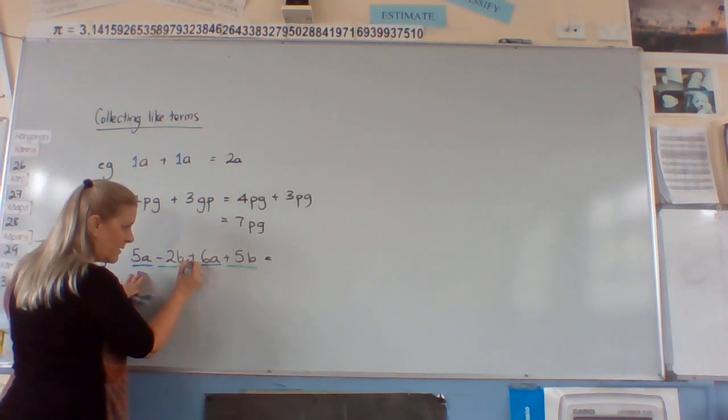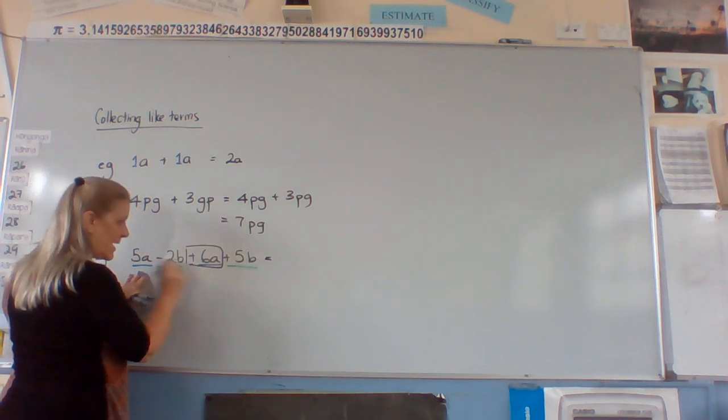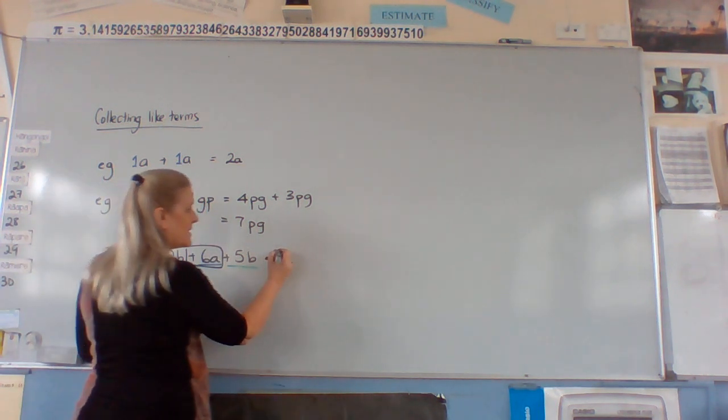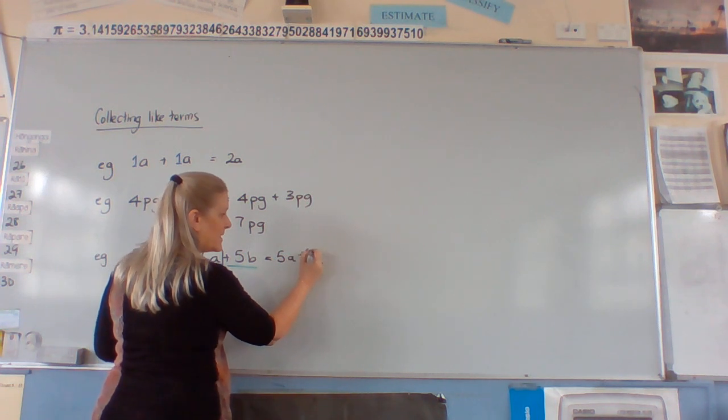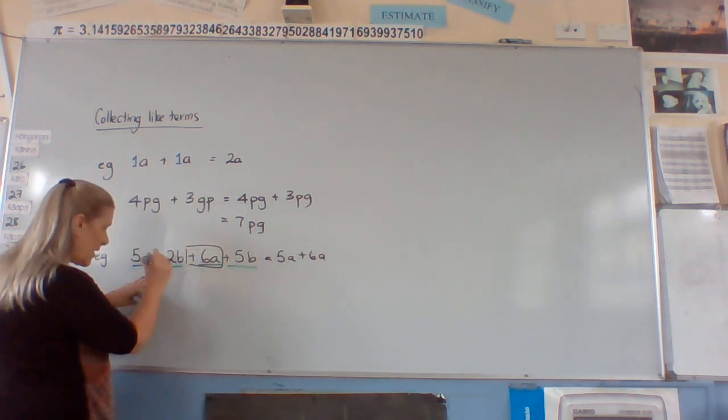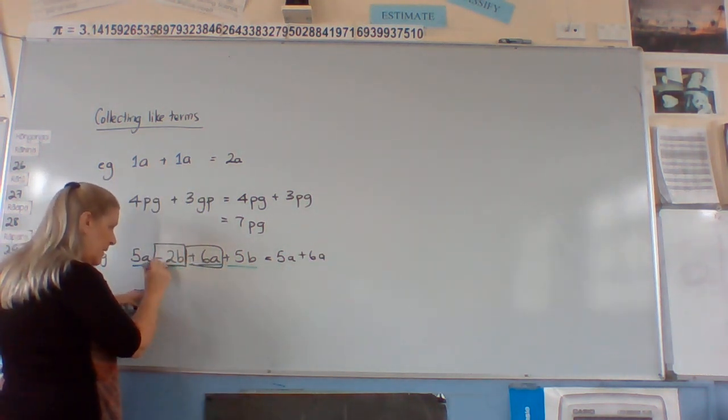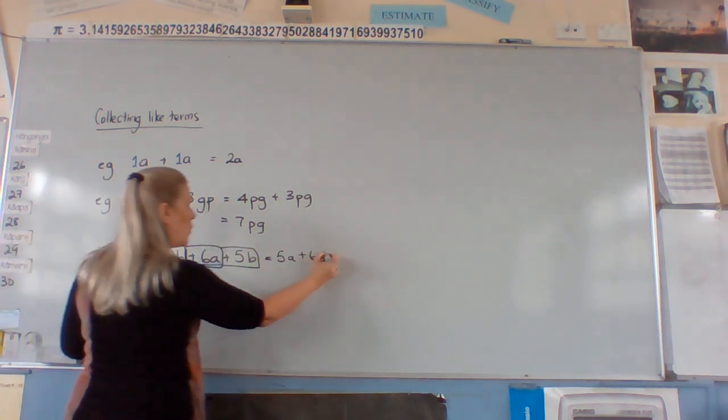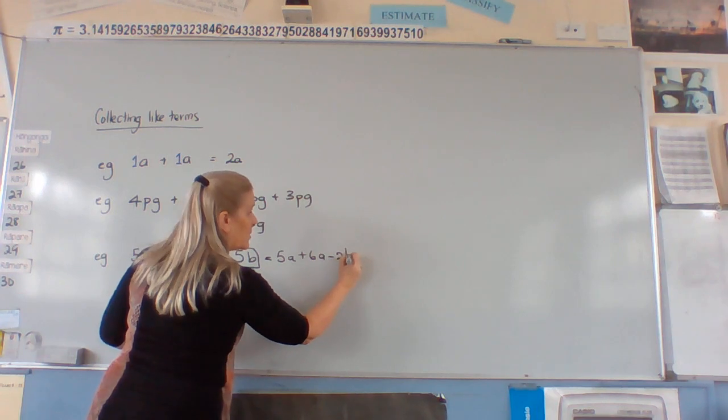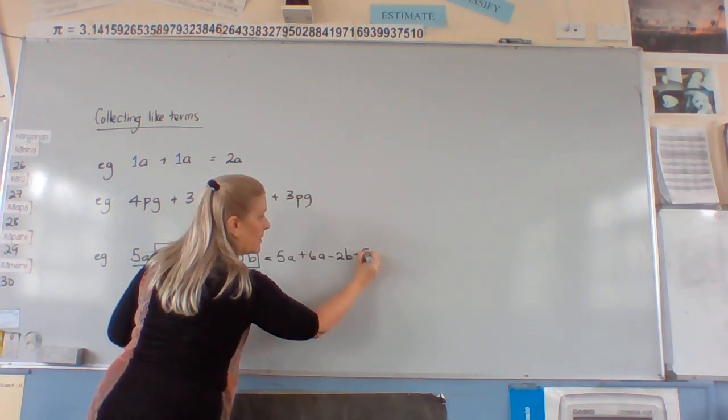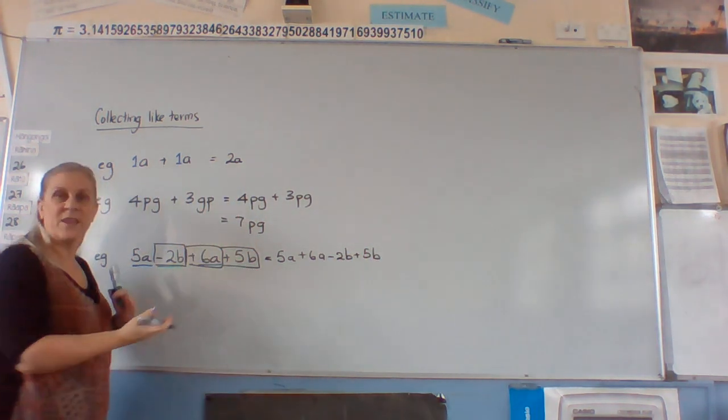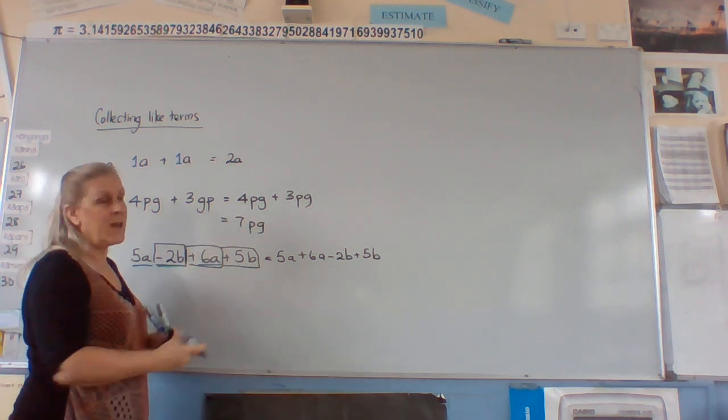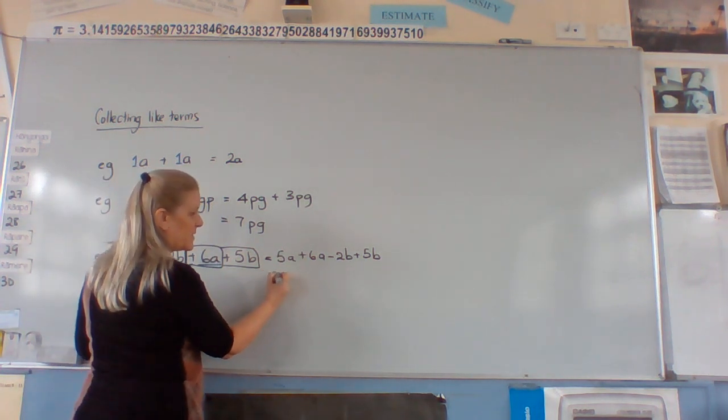we've got, and this sign goes with 6A, so 5A plus 6A. This sign goes with 2B, and this sign goes with the term. Now that we've got that done, we just treat them as 5A plus 6A equals 11A.